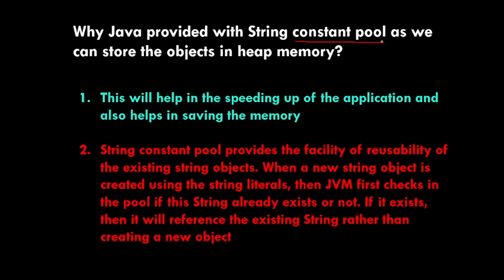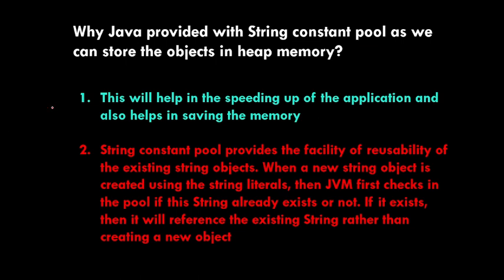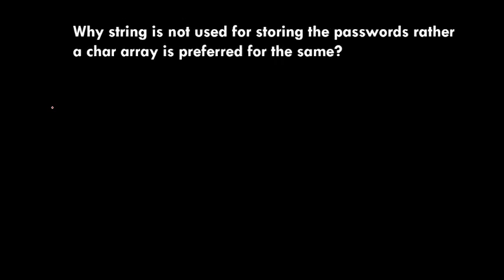So whenever you create an object, the JVM goes to the string constant pool, checks if the same literal already exists, and if so, it does not create a new object — it reuses it and gives a reference to the same object. I hope you understand. If you still have questions, comment below and I'll help you.